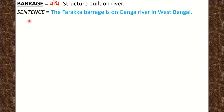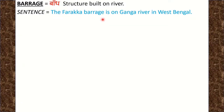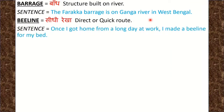Next word is Barrage. Barrage means बाँध — structure built on a river, वो जो dam बनाया जाता है. Sentence: The Farakka Barrage is on the Ganga river in West Bengal. Farakka Barrage जो बाँध है वो Ganga river पर West Bengal में है.